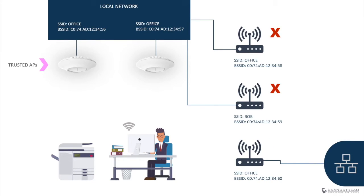Any access point broadcasting the same SSID used by the GWN AP will be flagged as a rogue AP if it is not listed in the trusted APs, even if it is not directly connected to the local network. For example, a malicious attacker may run an AP within the physical perimeter of the enterprise network to trick users into associating with the rogue AP instead — this is called an evil twin attack. In some cases it could simply be a neighboring AP using the same SSID, which is why it is important to run a Wi-Fi analyzer to learn about SSIDs used by neighboring access points before creating your own.